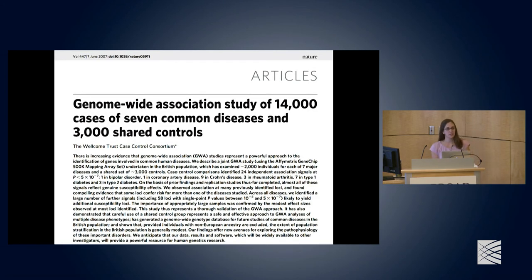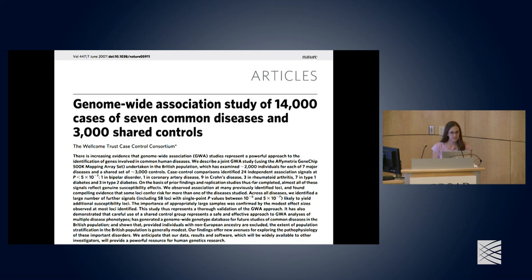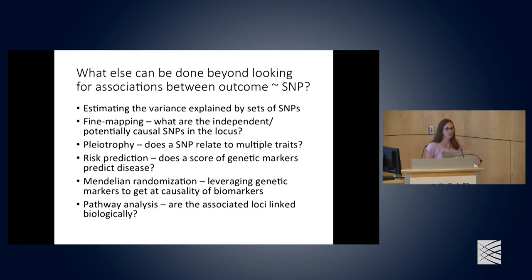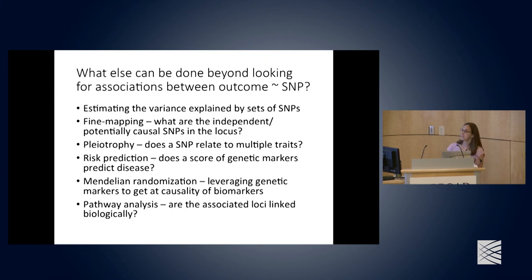The seminal GWAS paper was from the Wellcome Trust Case Control Consortium, published in June 2007. They looked at seven major diseases in the first large-scale GWAS. Since then, many loci have been discovered across many traits. Beyond looking at the association between outcome and SNP, there are many secondary analyses that can be done based on GWAS results.